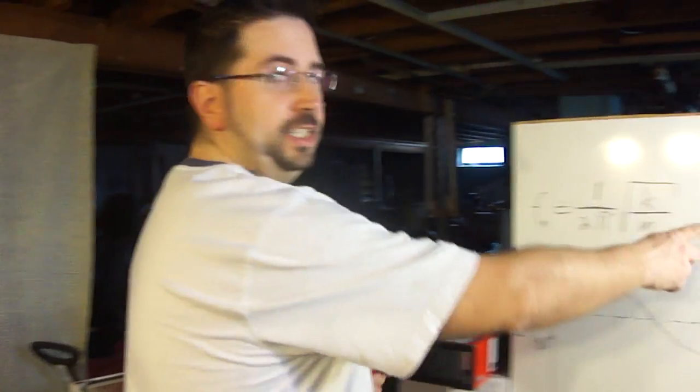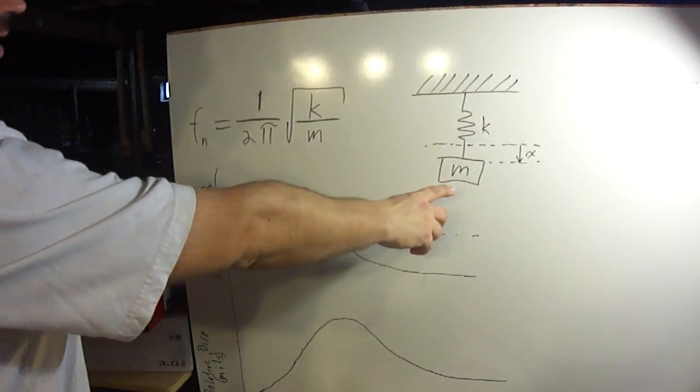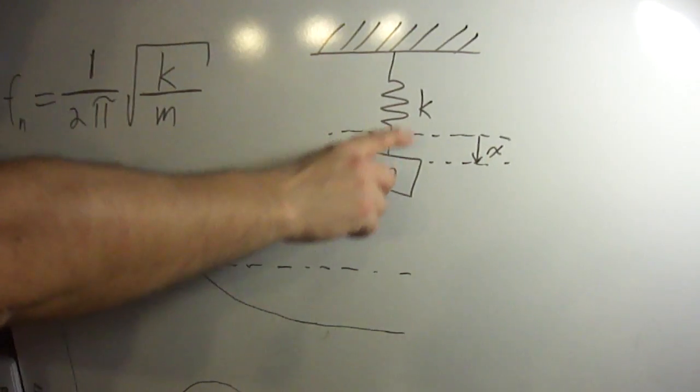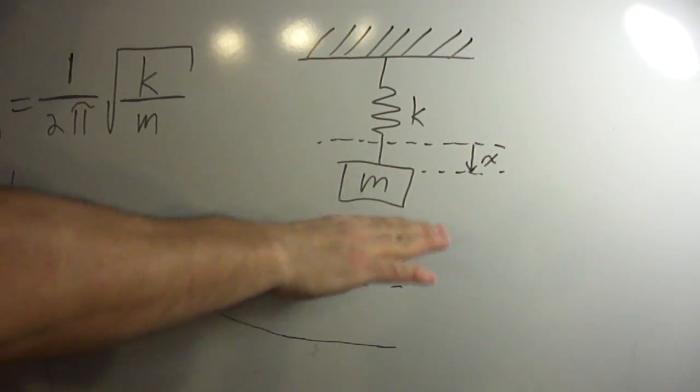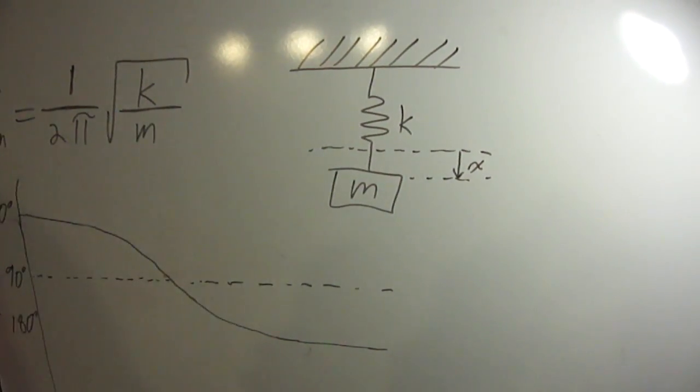So in that paper I describe a child's toy weight and spring mass described by this model here on my whiteboard. I've got a mass and a spring with a constant K displacing a distance X.